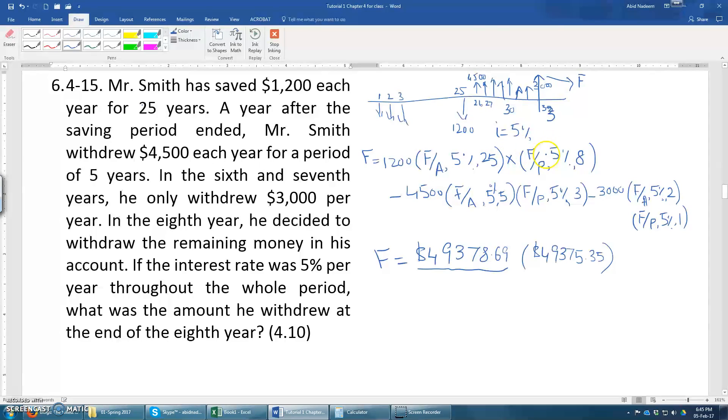And similarly for the other cash flows: $4,500 and $3,000.